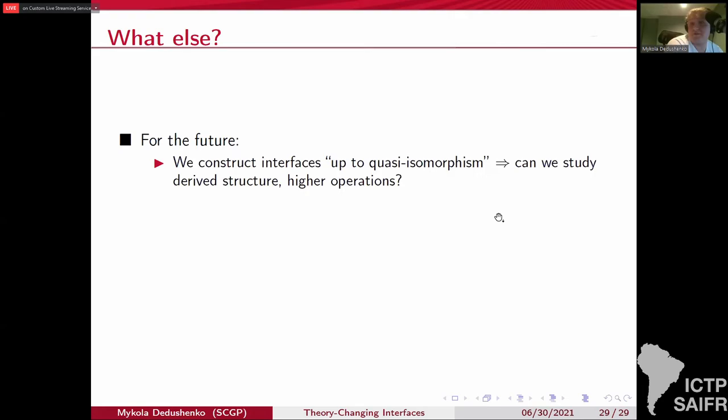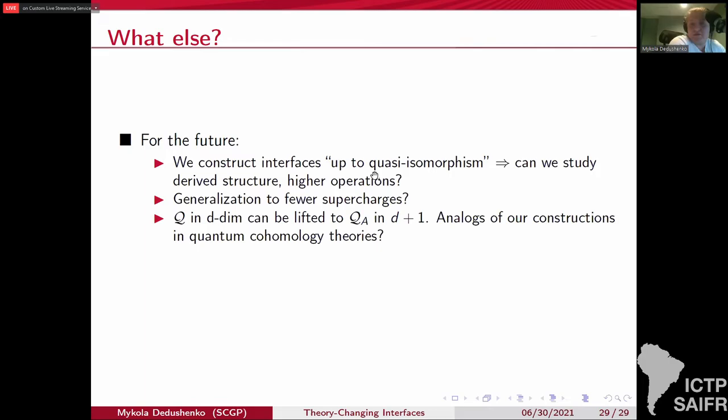And then use that to see that our interface describes the wall crossing of the half index. You act with the interface and you get the value of the index in different phase of the theory. And finally, there also exists a string theory construction of these systems in string theory compactified on Calabi-Yau space. And then you can use dualities to relate constructions to Q and Q_A supercharges, and also connect with the 4D chiral algebra approach to integrability. And finally, the future directions include, so first, we really constructed our interfaces up to quasi-isomorphism, which means that you can wiggle the shape of masses and you get in principle different interface. But at the level of Q cohomology, it's the same one. So that leads to questions about derived structures, higher operations, stuff like that. And the discussion in terms of Morse theory suggests that the generalization to fewer supercharges might be possible, maybe not as well behaved. Then our supercharge Q can be lifted to A model supercharges in D+1 dimensions in an appropriate way. So it suggests that these constructions have analogues in the quantum cohomology and quantum K theory cases. And lifting from 1D to Q_A in 2D suggests that there must be connections to the Gaiotto-Moore-Witten paper where they studied the Landau-Ginzburg models with the interfaces where parameters change, and with respect to the A model supercharge. And that's where I end.